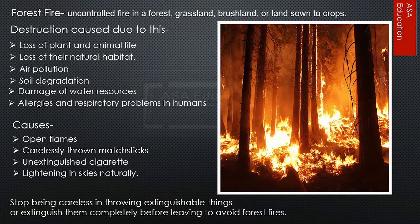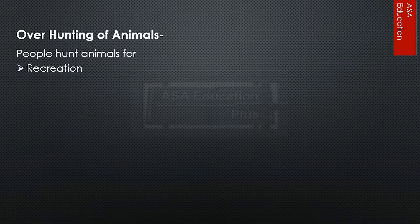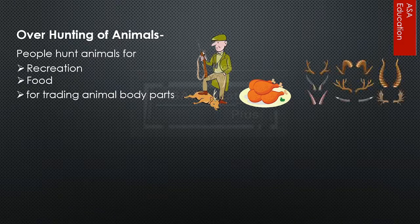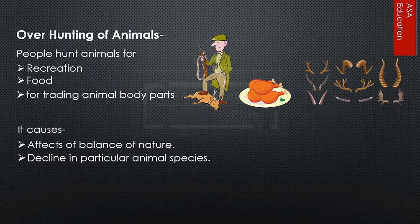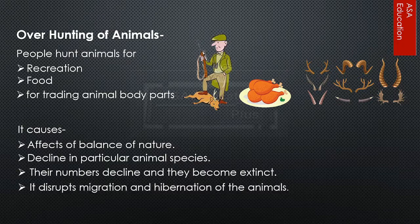We should stop being careless in throwing ignitable things, or extinguish them completely before leaving, to avoid forest fires. Overhunting of animals occurs when people hunt animals for recreation, food, or for trading animal body parts. It causes a decline in particular animal species — their numbers decline and they become extinct. It also disrupts migration and hibernation of animals.